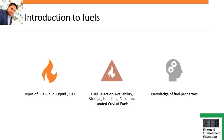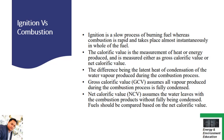Knowledge of fuel properties is very important and is explained throughout Chapter 2.1. Fuel properties help you select and use the fuel accordingly. As key points to remember: ignition versus combustion — ignition is a slow process of burning fuel, whereas combustion is rapid and takes place almost simultaneously throughout the full volume of fuel. This is the basic difference between the two.